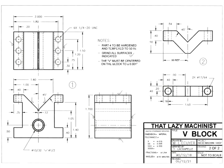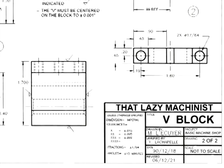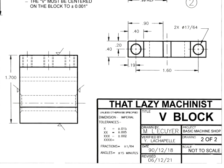Let's look at the bottom right of this print to see what the header indicates for general tolerances. In this box we can see that unless otherwise specified, dimensions are imperial. One decimal place has a tolerance of plus or minus 15 thousandths of an inch.